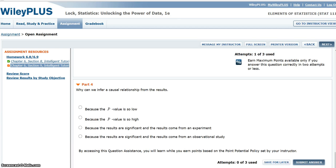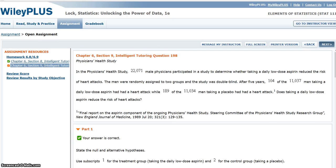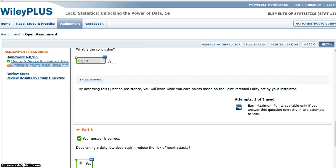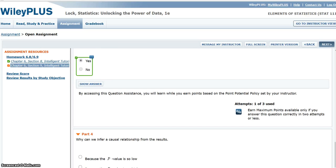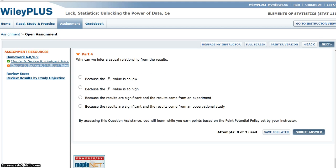And the last part, can we infer a causal relationship from the results? So, what this boils down to is, was this an experiment that had random assignment to treatments? Or was it an observational study? Because we know that we have a significant difference here. And, if we look back, we can see that the men were randomly assigned to the groups, which means it is a randomized experiment. And so, we can make a cause and effect conclusion. Because the results are significant, and the results come from an experiment, we can infer a causal relationship.